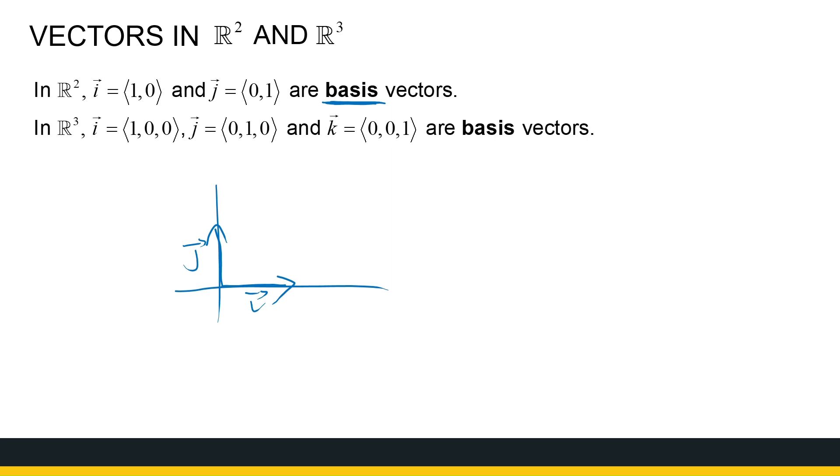We call those the basis vectors, because if I've got any vector, let's look at the vector 4, 2. I can write that vector in terms of the basis vectors, because that is 4 times the vector i, because it's 4 steps in the x direction, plus two steps in the y direction.